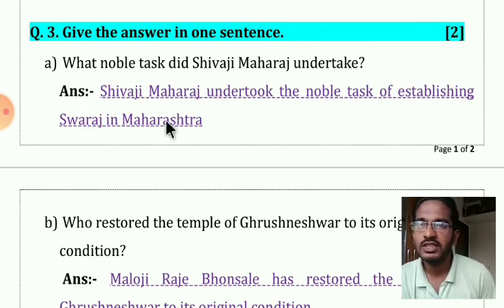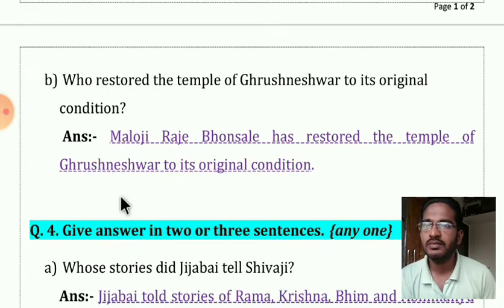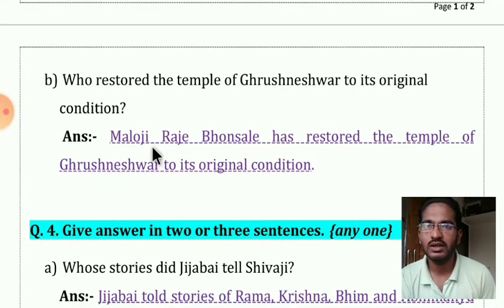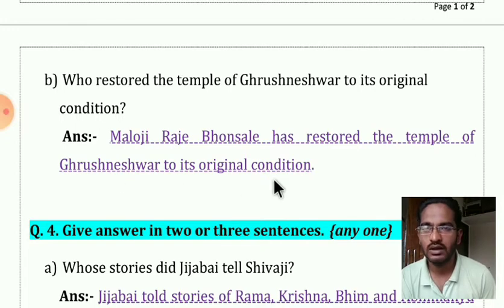The answer is: Shivaji Maharaj undertook the noble task of establishing Swaraj in Maharashtra. The next question: who restored the temple of Grishneshwar to its original condition? The answer is: Maloji Raje Bhosale restored the temple of Grishneshwar to its original condition.